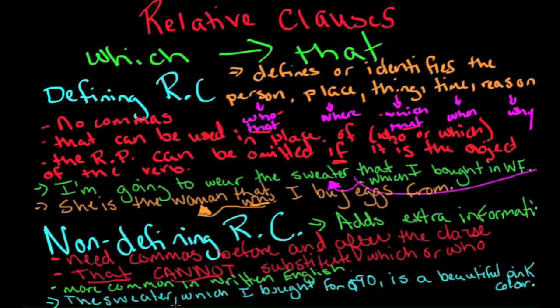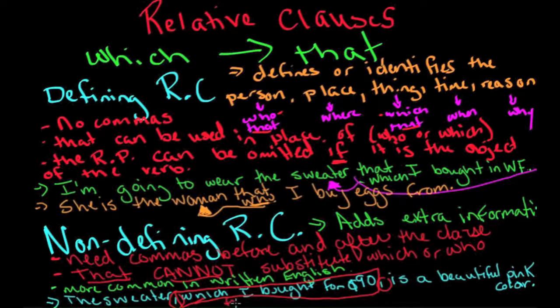So you can see here's my two commas, before and after. Here's my non-defining relative clause, which is extra information. It's not needed. The sweater is a beautiful pink color. That's the information that I wanted to tell you. That's the important piece of information. This is just a little added information for the side. In this case, that cannot be substituted. We cannot use that in place of which.